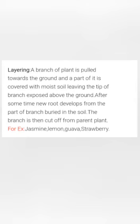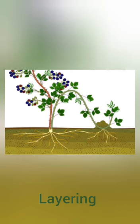Layering. A branch of a plant is pulled towards the ground and a part of it is covered with moist soil, leaving the tip of the branch exposed above the ground. After some time, adventitious roots develop from the parts of the branch buried in the soil. The branch carrying the roots is then cut off from the parent plant. For example, jasmine, lemon, guava, and strawberry.